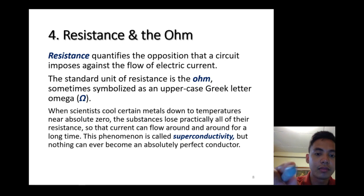Resistance and the Ohm. We already talked about the ohm as V = IR. This is the famous formula for circuits. Resistance quantifies the opposition that the circuit imposes against the flow of electric current. The standard unit of resistance is the ohm. You can think of R = V/I. By manipulating this Ohm's law, the unit is ohm, or we call it omega.